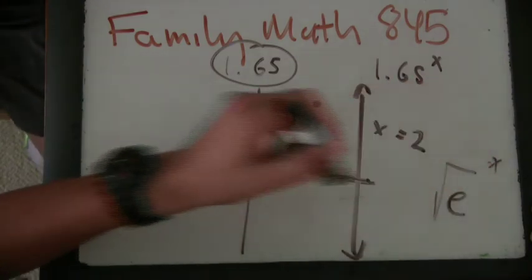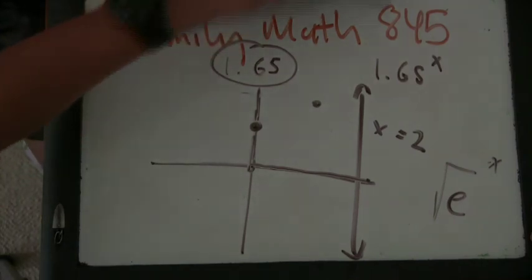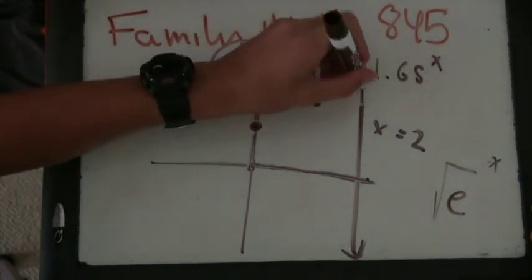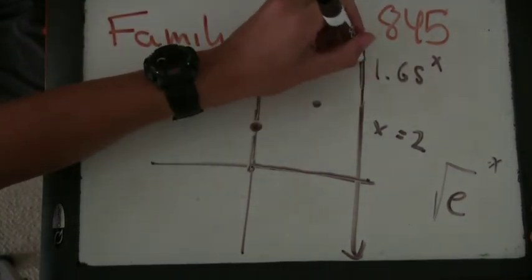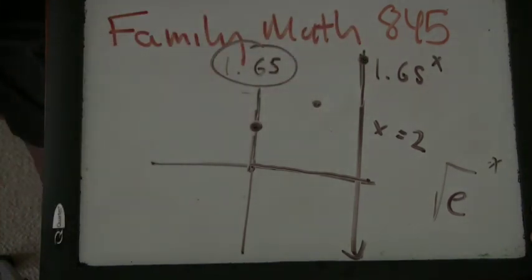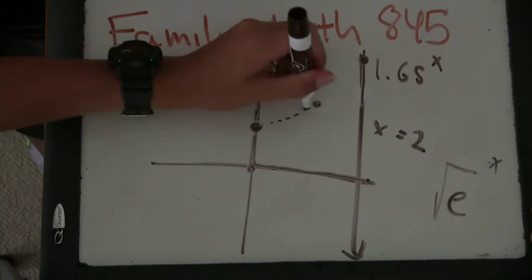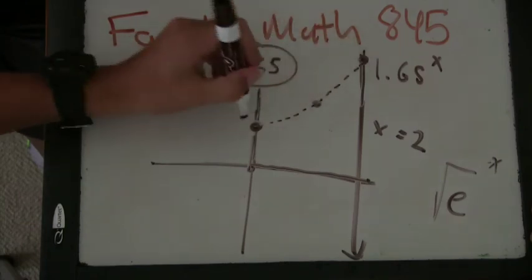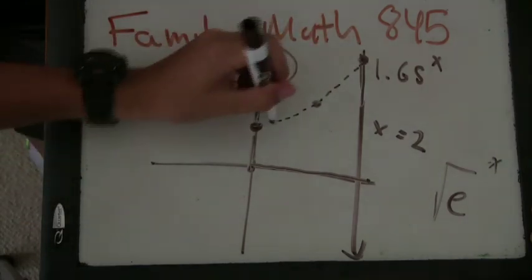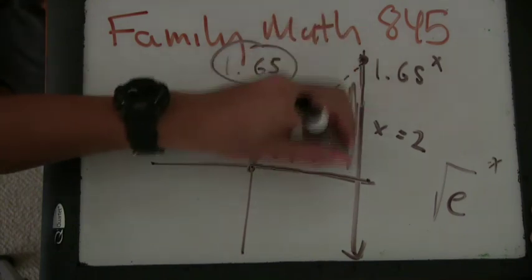So, what is e? It's about 2.7. So, it's gonna be like, up here. Alright. So now, we have our region. This kind of goes like that. We might shade in the region. We're trying to find the area.